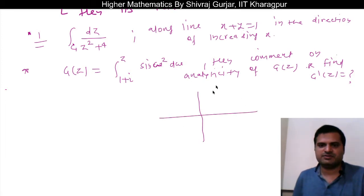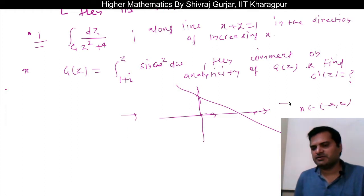What is x plus y? x plus y is this line. x increasing means this direction. So x varies from minus infinity to infinity. Here x is minus infinity and here plus infinity.